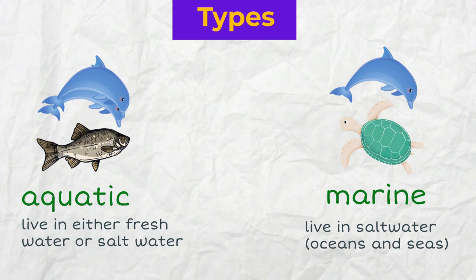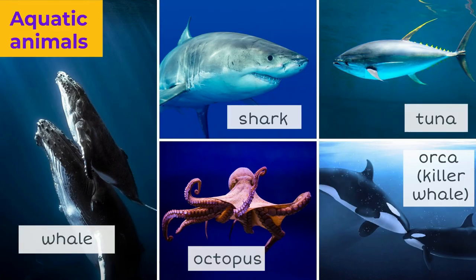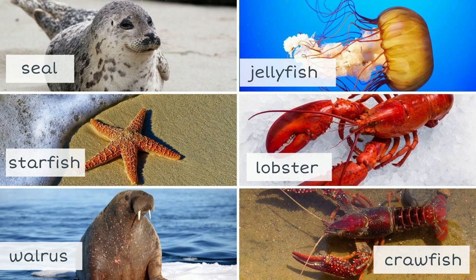The term aquatic animal can be applied to animals that live in either freshwater or saltwater. However, marine animals are those that live in saltwater, in oceans and seas. Some examples are a whale, a shark, a tuna, an octopus, an orca — also known as a killer whale — a seal, a starfish, a walrus, a jellyfish, a lobster, and a crawfish which lives in freshwater.